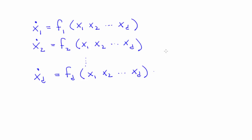Delay coordinate embedding, the main topic of this unit, is a very useful technique. It's actually quite amazing in that it lets you reconstruct unmeasured information. The reason that works goes back to the standard form for ordinary differential equations. Note that the change in each state variable is a function of the other state variables. That means, for example, that the values of x2, x3, and so on up to xd influence how x1 changes.